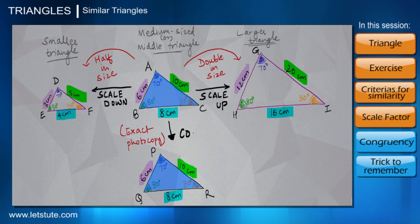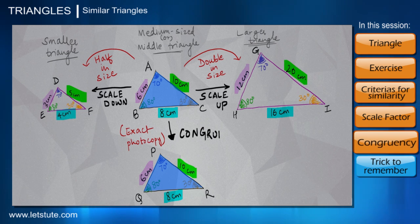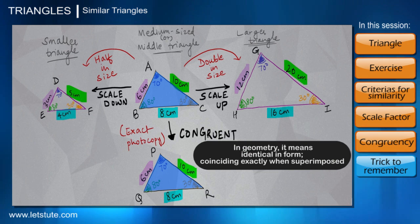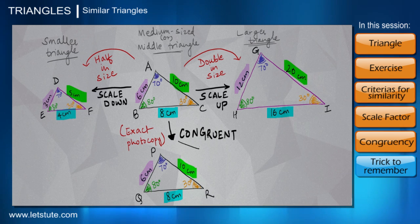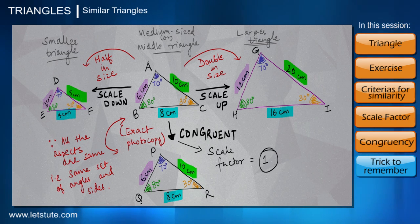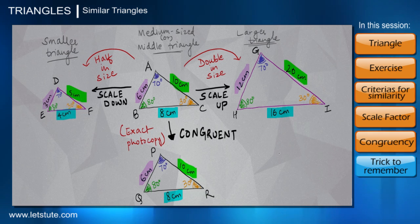In other words, I can say it will be the exact photocopy of our given triangle ABC. In such a case, whenever two shapes or two figures are exactly the same, then in geometry we call them congruent. So we can say triangle ABC and triangle PQR are congruent to each other. What can we comment about the scale factor over here? Scale factor is definitely going to be just one, because all of its aspects are the same. These are the main ideas that we have to keep in mind when we are constructing similar triangles.